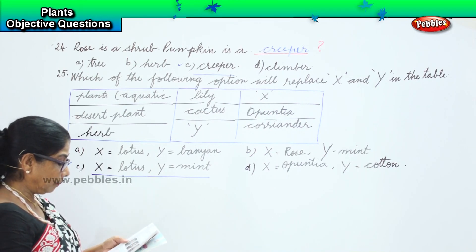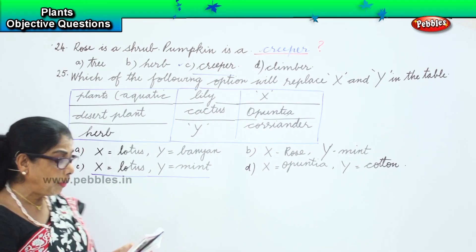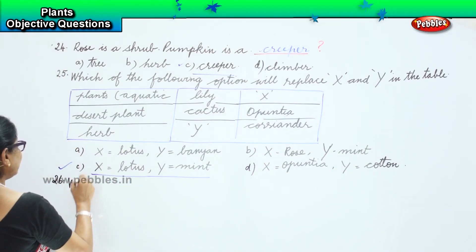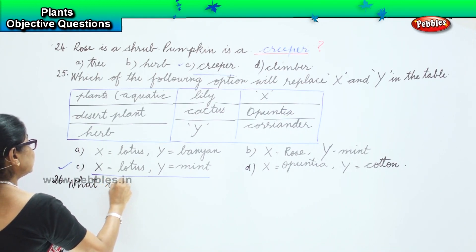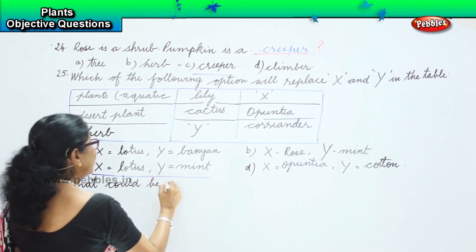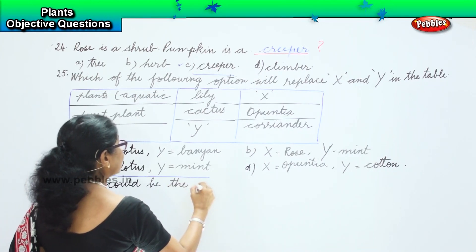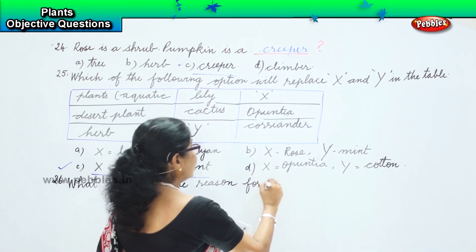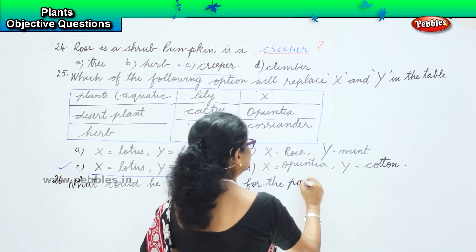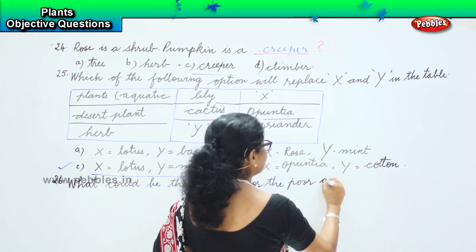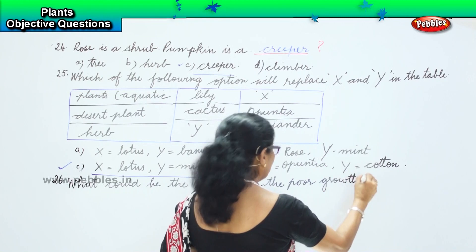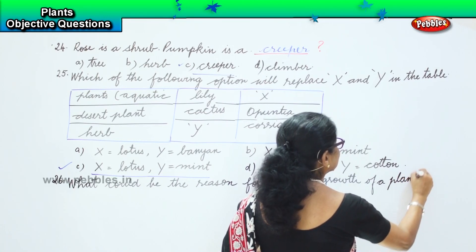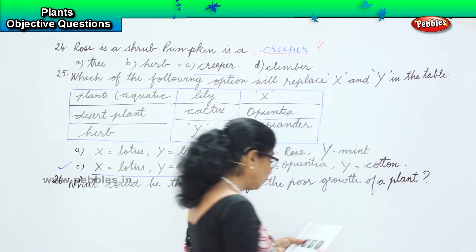In the 26th question, we are asked: what could be the reason for the poor growth of a plant?